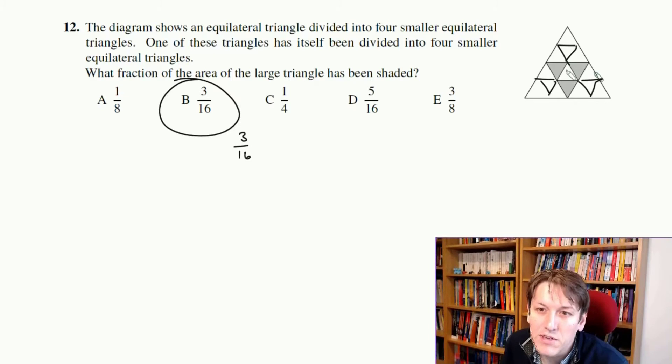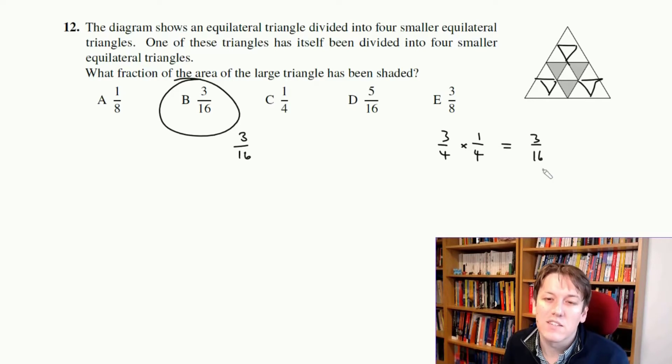You could also just look at the middle triangle and say, well, it's 3 quarters of the middle triangle, and the middle triangle is a quarter of the large triangle, so it's 3 quarters times a quarter, or 3 quarters divided by 4, which again gets us to 3 sixteenths.